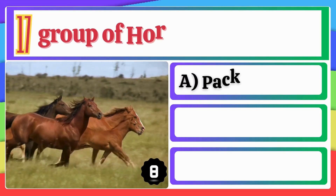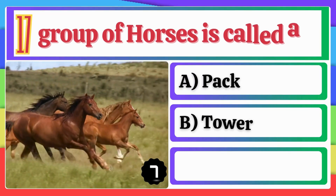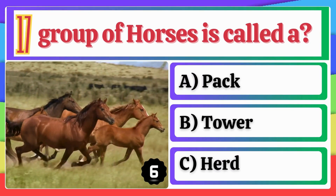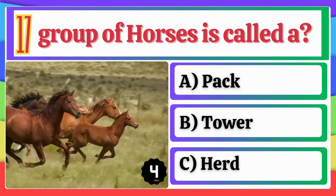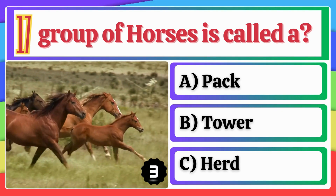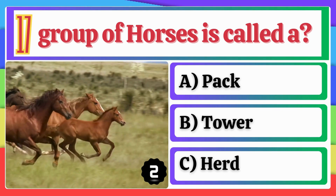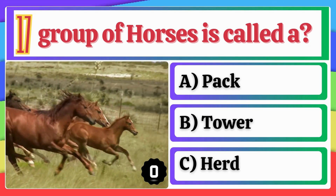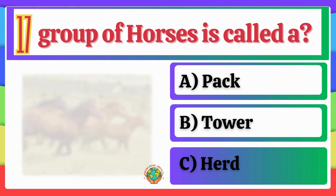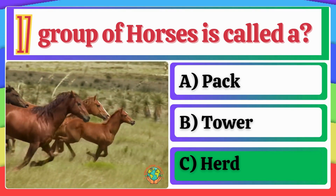A group of Horses is called a? Option C, Herd, is correct.